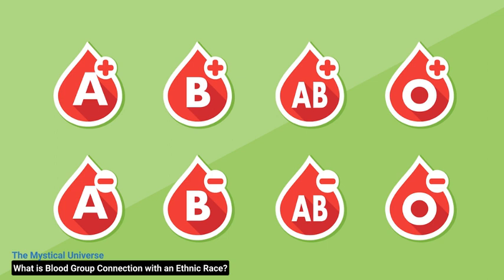Blood type is connected to ethnicity in several ways. First, the ABO system is thought to be responsible for certain inherited traits and diseases. For example, a person with type A blood is known to have a higher risk of hemochromatosis, an iron storage disease, than someone with type B or AB blood. This risk may be because the A gene is associated with more iron storage capacity. Other studies have demonstrated that persons with type O blood are more prone to experience specific cancers, while those with type AB blood have an increased risk of leukemia.